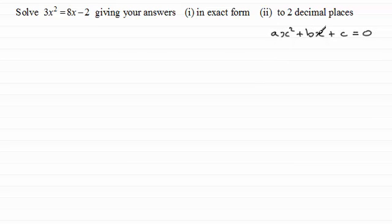Where a, b, and c are constants. I can rearrange this equation quite easily into this format by subtracting 8x and adding 2 to both sides. So we're going to get 3x squared minus 8x plus 2 equals 0.